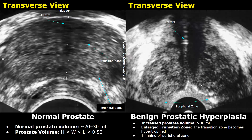Here is another image of benign prostatic hyperplasia. The prostate gland is enlarged with enlargement of the transition zone and thinning of the peripheral zone. The gland becomes more hypoechoic and heterogeneous. Sometimes you may find a hypoechoic boundary between the transition zone and the peripheral zone — this boundary is called the surgical capsule.